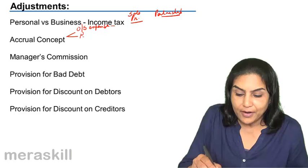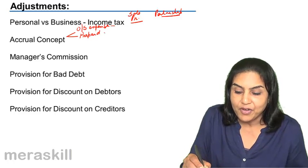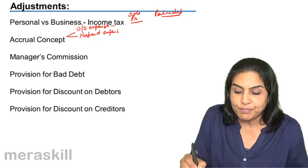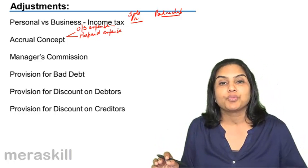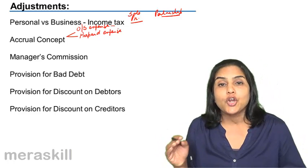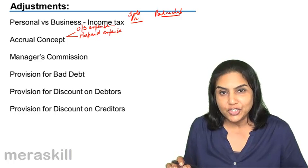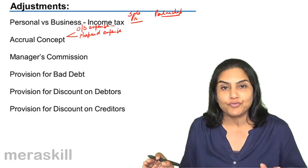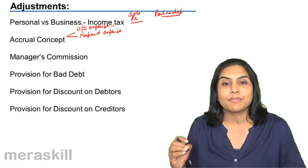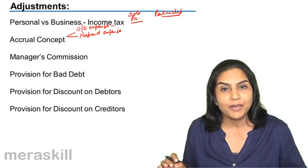Similarly, the opposite could be the case, that is, we may have what is called the prepaid expense, that is an expense which we have paid in advance. Normally, comes in the case of insurance because we pay insurance for 12 months, while the insurance may have been taken any time during the middle of the year.